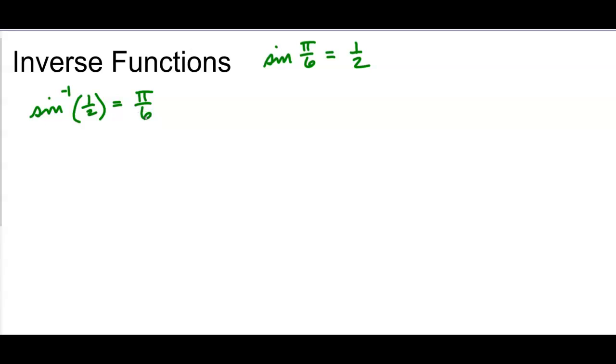So in a regular sine function, we're taking the sine of an angle and then we get some value. Now they're going to have the value, the inverse function of the value, and we're going to get the angle measurement. So we're kind of saying what angle would give me a sine of 1 half?